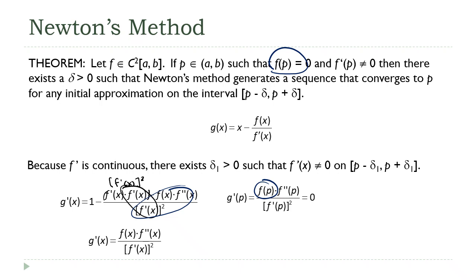Instead of epsilon, I'm going to say k. So what I have now is for any k between zero and one, there exists a delta greater than zero, such that if the absolute value of x minus p is less than delta, then the absolute value of g'(x) minus g'(p) is less than or equal to k.